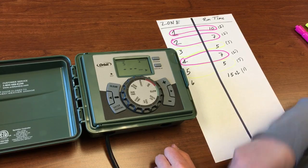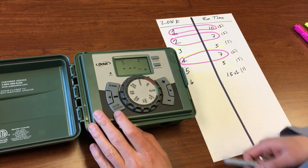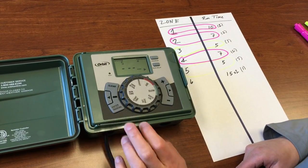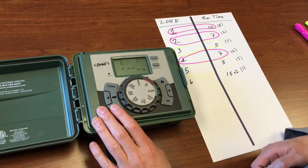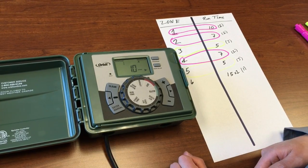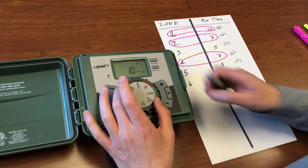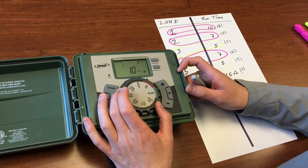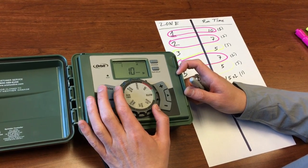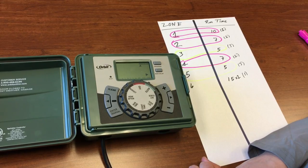Hit enter. Now station 5 again we're skipping that one so we'll just leave that at 0. Hit enter and station 6 also skipping that one on this program. We've now set our runtime for each of the stations on this program and we need to tell it how often.